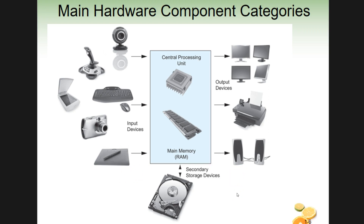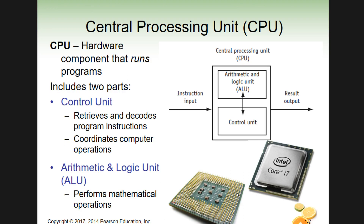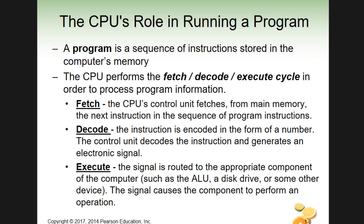The CPU is the component that actually runs your programs. It has two main parts: the control unit, which fetches instructions and coordinates what the computer does, and the ALU (arithmetic logic unit), which performs math operations. The CPU's basic cycle is fetch, decode, execute — getting instructions, decoding them, and executing them.